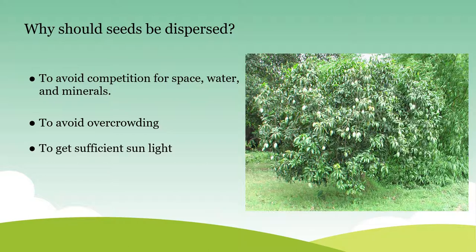Why should seeds be dispersed? You can see a mango tree full of fruits on the screen. What if all fruits or seeds of that tree fall at the same place? Then there would be competition for space, water and minerals for the newly growing plants. Because of the overcrowding, there won't be sufficient sunlight also, so the new plants cannot grow well to become trees.